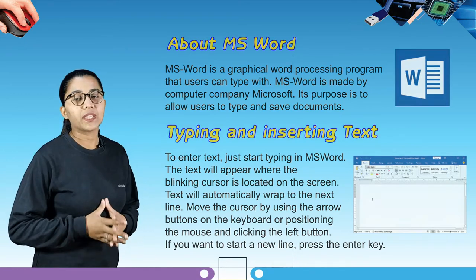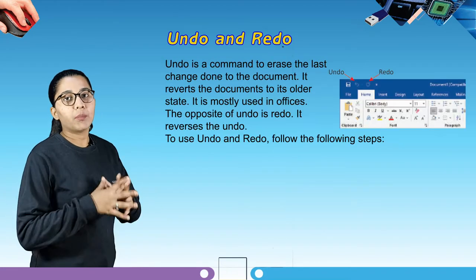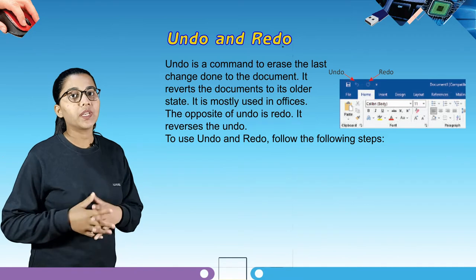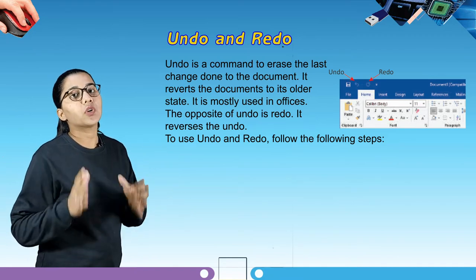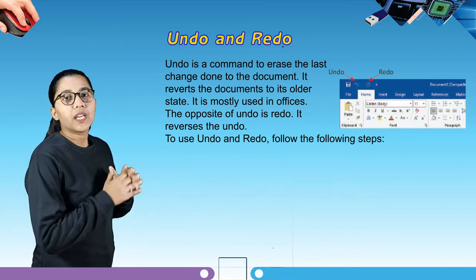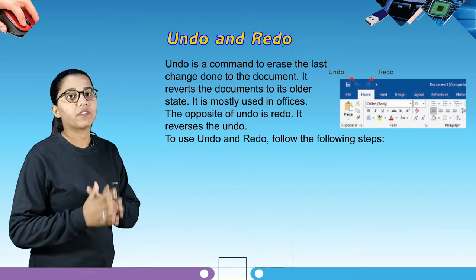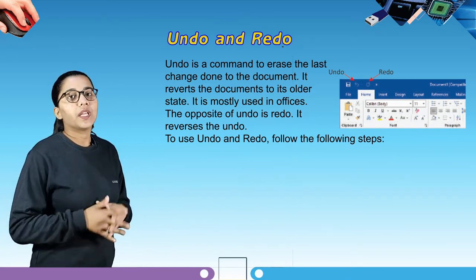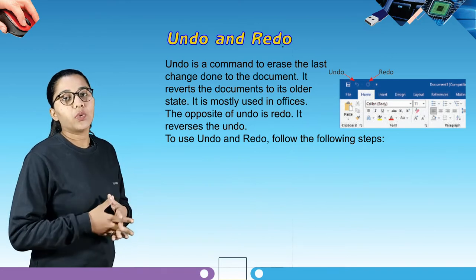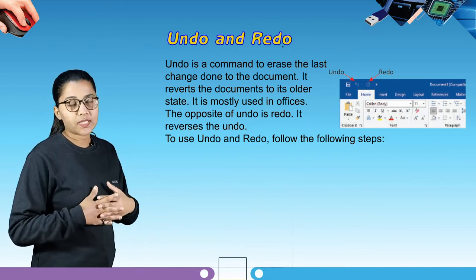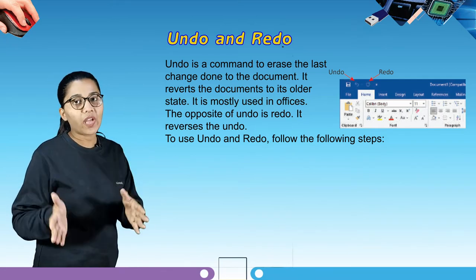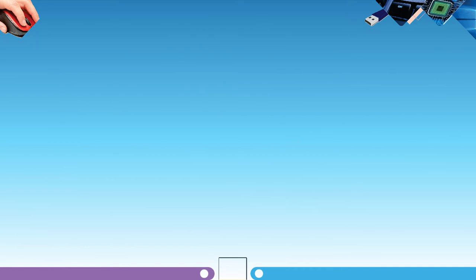Let's move to our next topic — undo and redo. Undo is a command to erase the last change done to the document. It reverts the document to its older state and is mostly used in offices. The opposite of undo is redo, which reverses the undo. To use undo and redo, follow these steps.